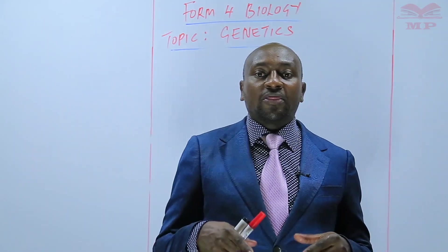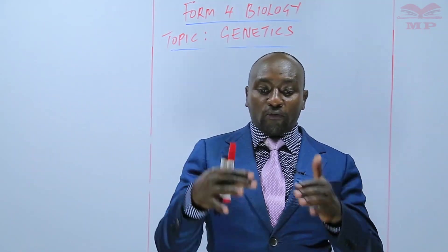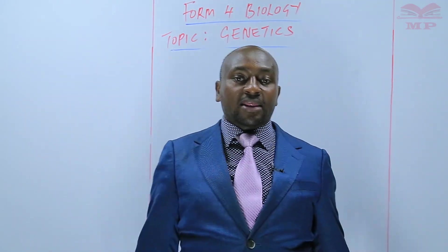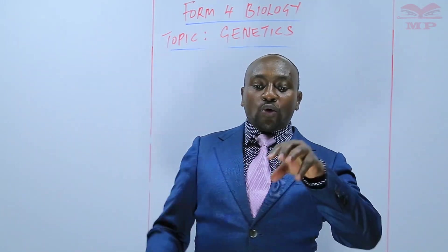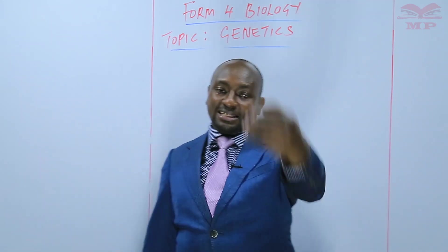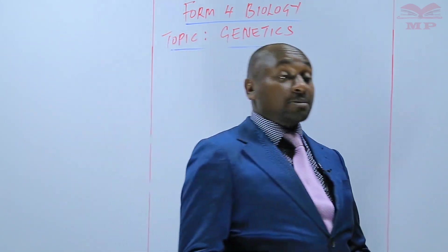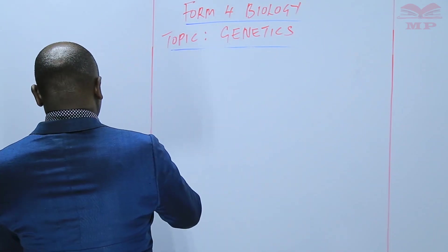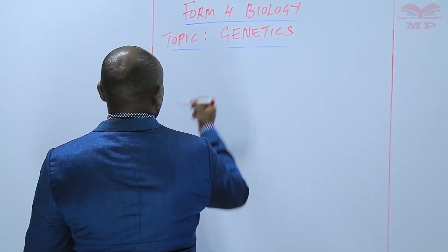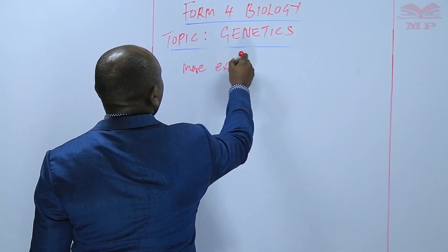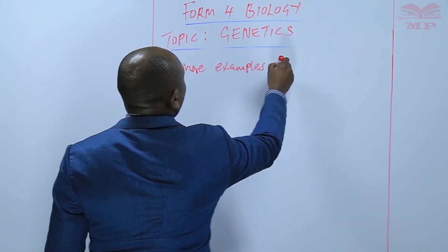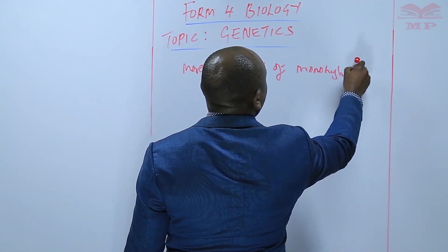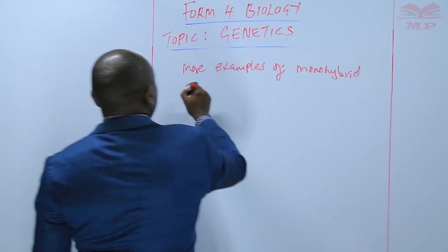What will be the offspring from the cross pollination? When cross pollination occurs and we take those seeds and plant them, what kind of plants shall we expect? We want to use that as more examples of monohybrid inheritance.